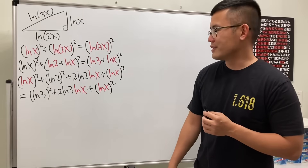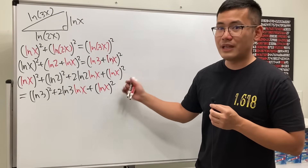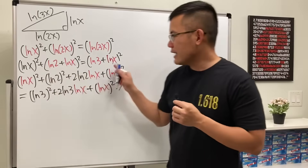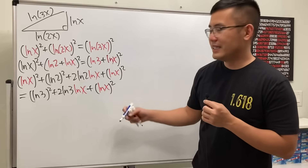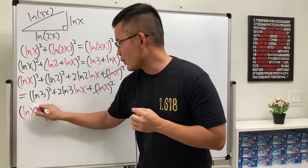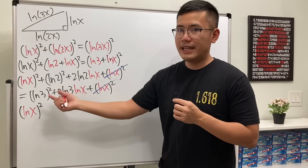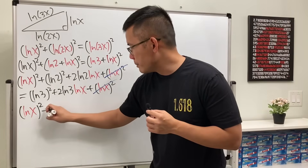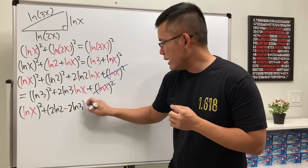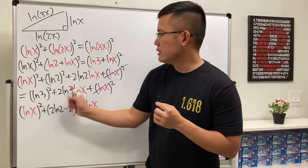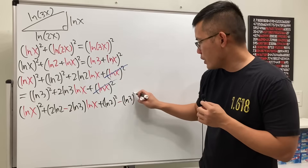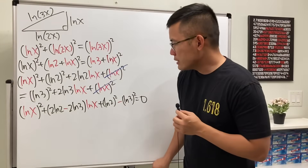This is looking like a quadratic equation in terms of ln(x). Cleaning things up: on both sides we have an ln²(x) term, so those cancel. We still have another ln²(x) from the expansion. Bringing everything to one side and factoring out ln(x), we get: ln²(x) + (2·ln(2) − 2·ln(3))·ln(x) + (ln²(2) − ln²(3)) = 0.